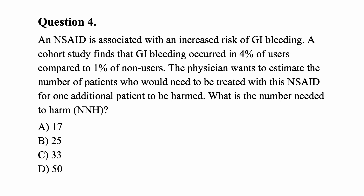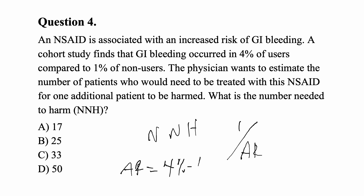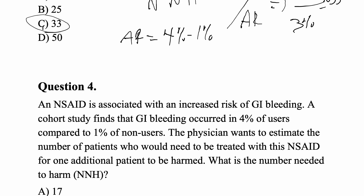Question four: An NSAID is associated with increased risk of GI bleeding. A cohort study finds GI bleeding occurred in 4% of users compared to 1% of non-users. What is the number needed to harm? NNH equals 1 over the attributable risk. Attributable risk equals 4% minus 1% equals 3%. So NNH equals 1 over 3%, which is approximately 33. The answer is C.